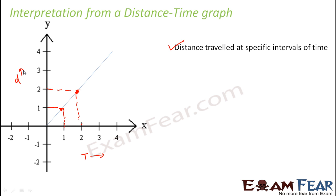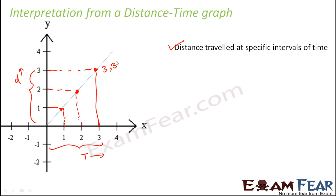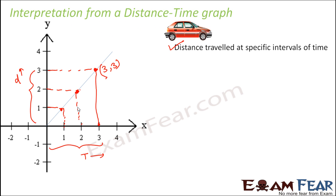If I give you this graph and ask how much distance has been covered in three hours, you look at three hours on the x-axis, find the corresponding point, and read off three kilometres on the y-axis. So three kilometres is travelled in three hours. Each point on the graph represents how much distance has been travelled in how much time.